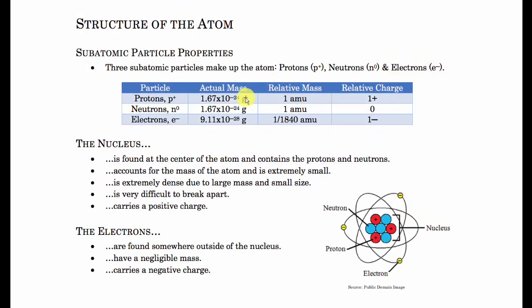What scientists did after Dalton came up with the atomic theory was they started to see if they could take the atom apart — and that was the first mistake in his work, or rather, he just didn't know because of the time he was in, 1803. Around 1897, almost 100 years later, scientists started picking apart the atom. They first discovered the electron, then the nucleus, and then protons and neutrons.